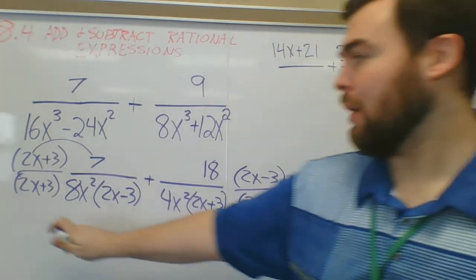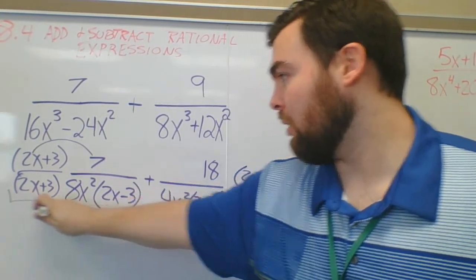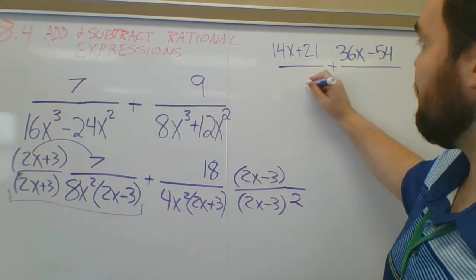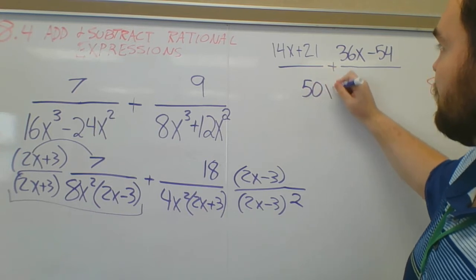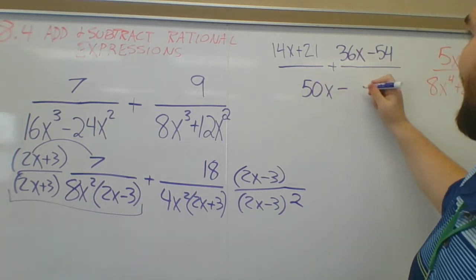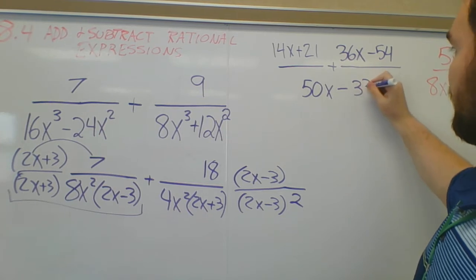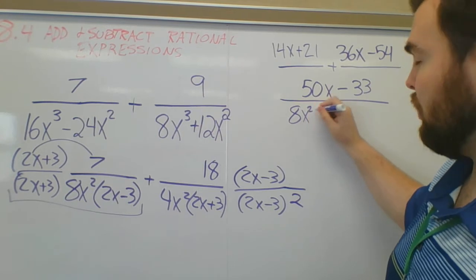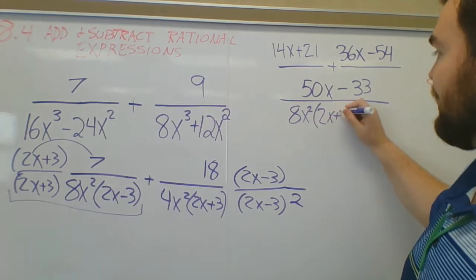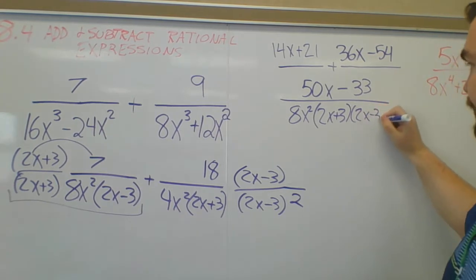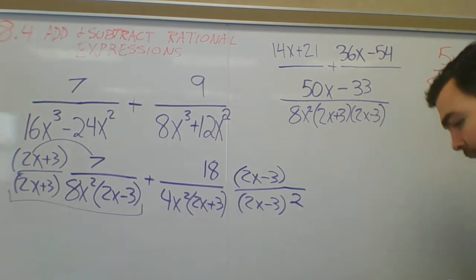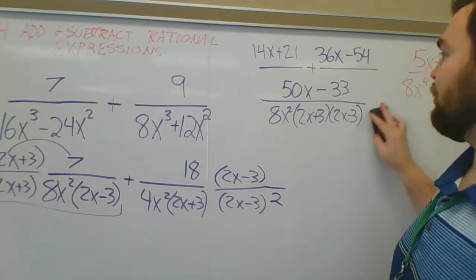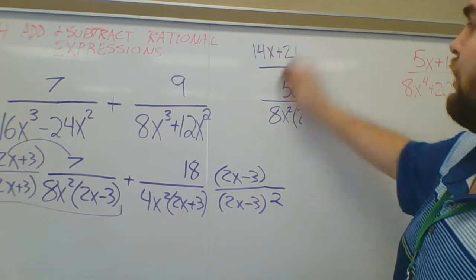Now combine like terms. My denominator is the least common multiple. 14x and 36x combine to make 50x. 21 and negative 54 combine to make negative 33. Put it over your denominator: 8x squared times (2x plus 3) times (2x minus 3). That's your answer. Make sure you're always paying attention to how you factor.